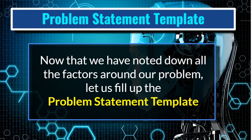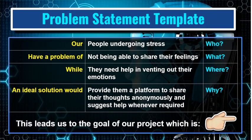Now, the overall problem statement can be written easily with the problem statement template. Now that we have noted down all the factors around our problem, let us fill up the problem statement template. In this template there are three columns and four rows. Each row is for one canvas of the 4W canvas — the first is Who, the next is What, the third is Where, and the last is Why.